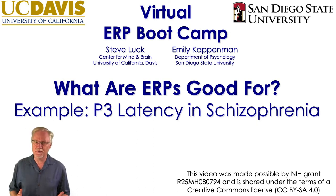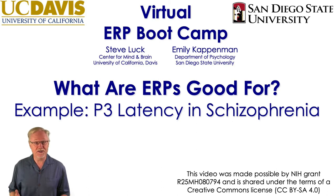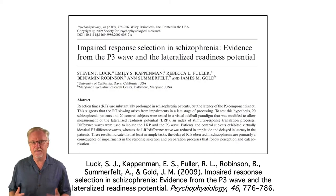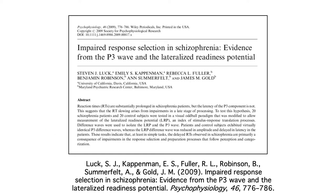Now that you've seen how we can use difference waves to draw very strong conclusions about the timing of processes like attention, categorization, and response selection, I'd like to show you a more detailed example. I'm going to talk about this study of the P3 wave in schizophrenia that we published many years ago. This study fits into the general theme of what are ERPs good for, because it shows how the continuous nature of the ERP signal can allow us to determine which stages of processing are responsible for a difference in behavior between two groups of subjects.